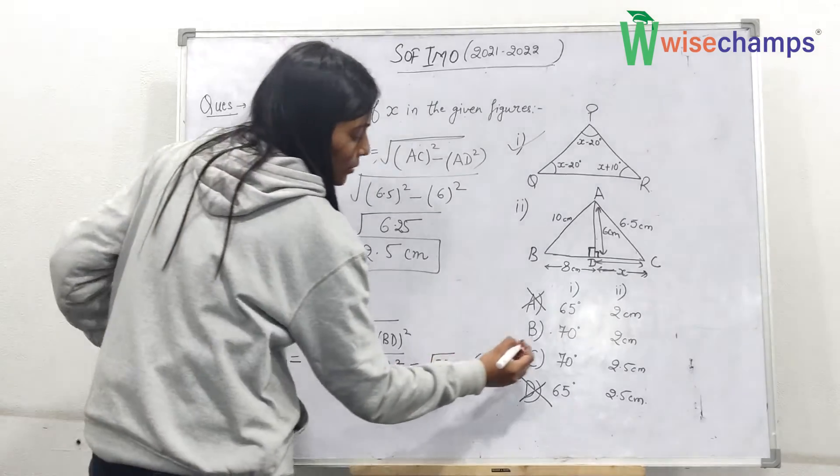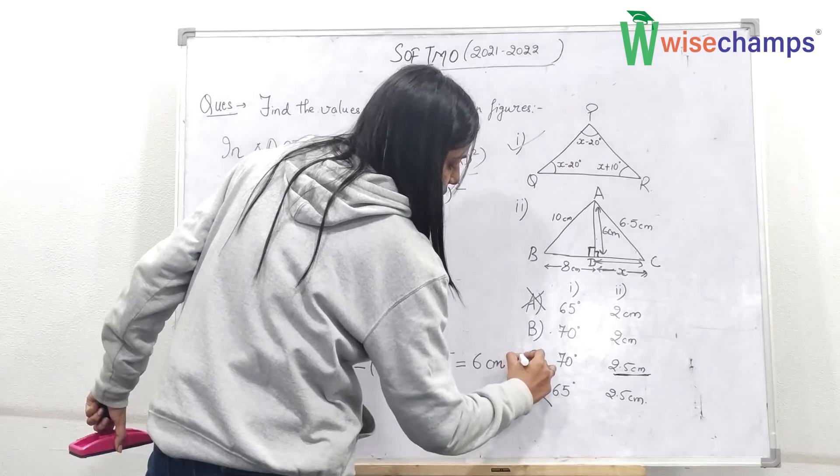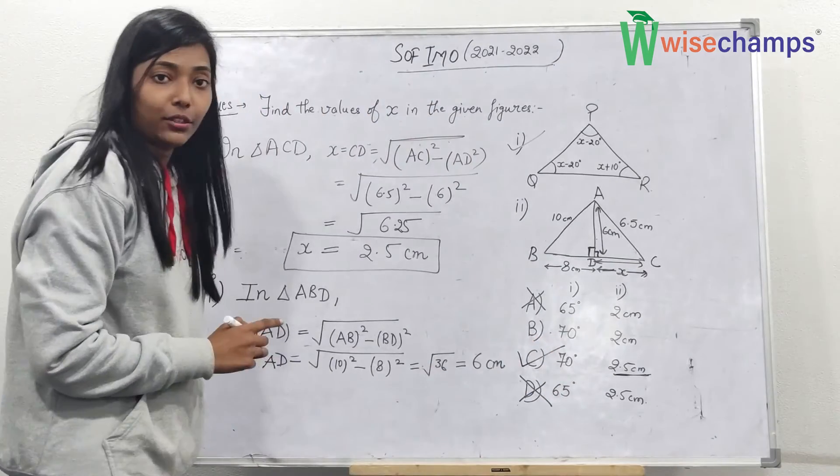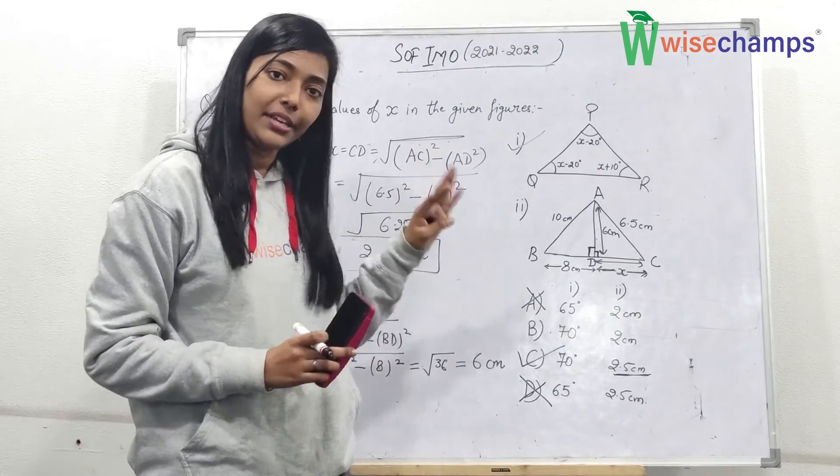So now easily you can see the correct option. Here the value of the second figure is 2.5, so answer C would be the correct option. So I hope you have understood the solution. Thank you so much.